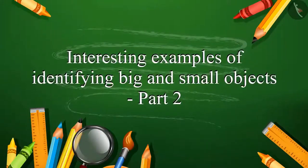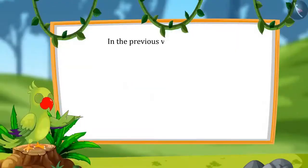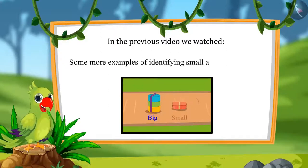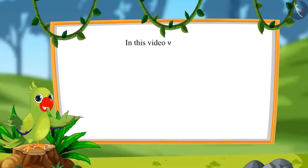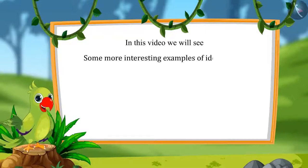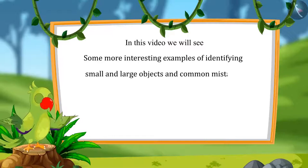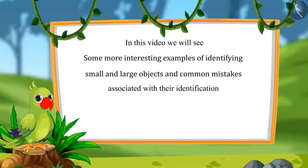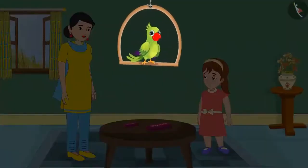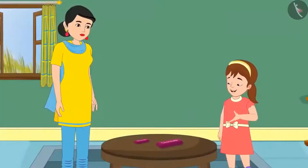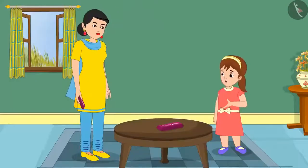Interesting examples of identifying big and small objects. Today, Chotu and Pinky's maternal uncle brought two chocolates for them. Mom, give me one of these chocolates please. Here, take Pinkie. Mom, I want a big one because this one is too small.